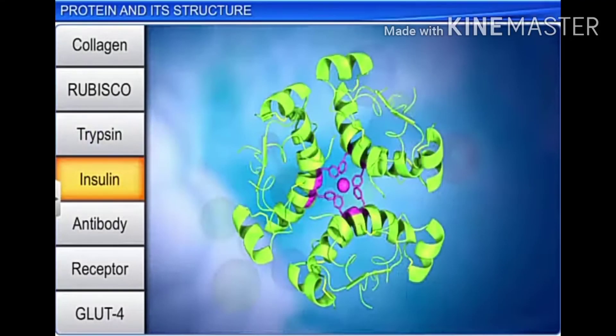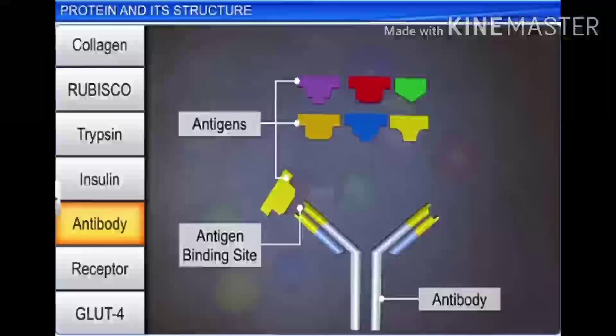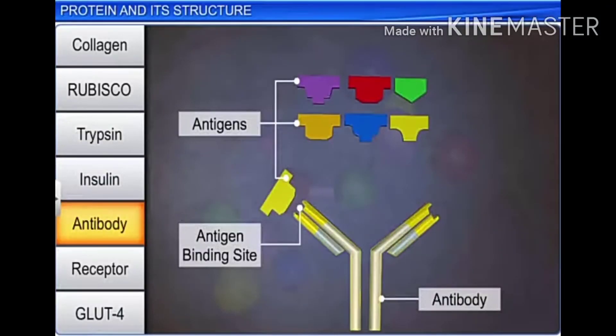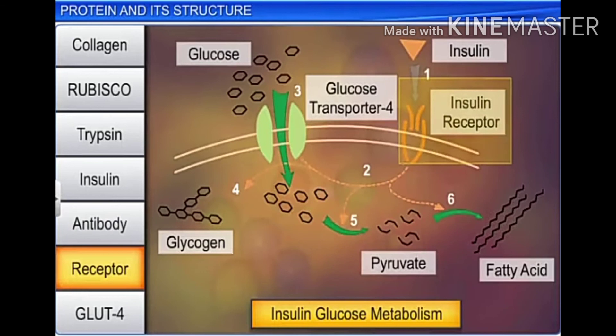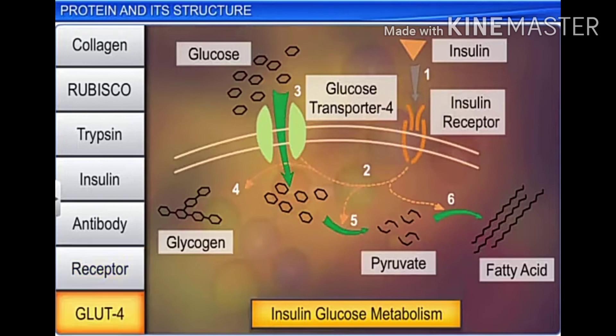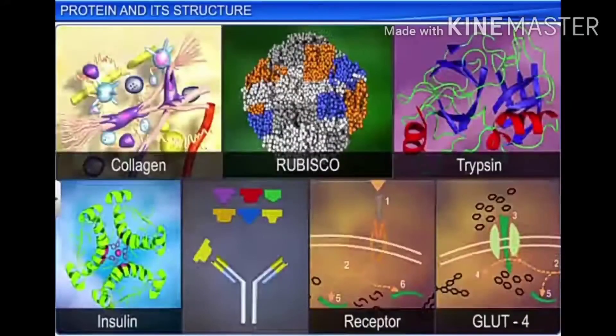Antibodies help fight infections. Receptors help in sensory reception, while glucose transporter 4, or GLUT-4, helps in transporting glucose to the cells. In this manner, various proteins play a vital role for every living organism. The structure of these proteins is crucial in determining their functions.